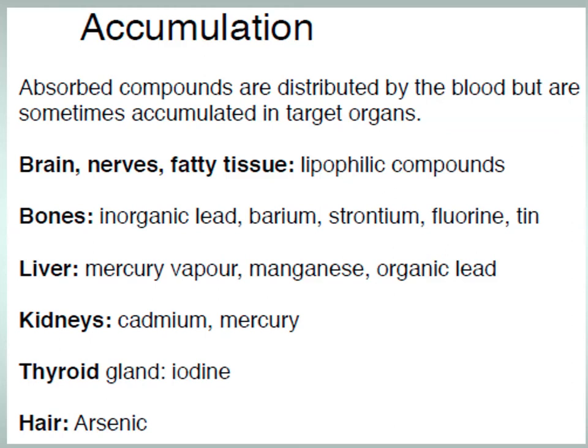By the parenteral route, toxins injected through a needle — subcutaneously, intramuscularly, or intravenously — pass directly into the bloodstream without entering the digestive tract. Such poisoning can occur very rarely as a result of accidental mistakes. Through the placenta, toxins can be passed from pregnant mothers to the fetus, causing fatal poisoning from ethyl alcohol, chlorinated pesticides, and heavy metal salts. Toxins can also enter the body through the uterus and some other ways.